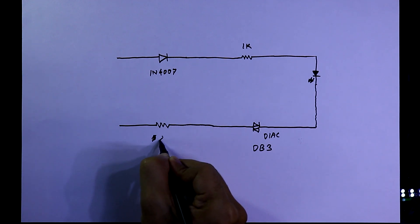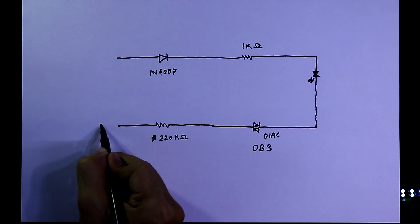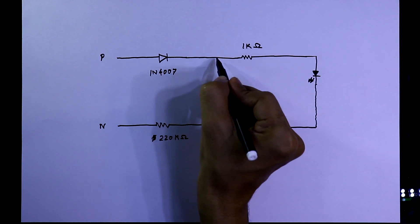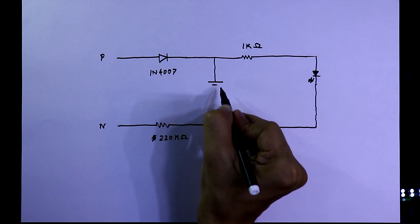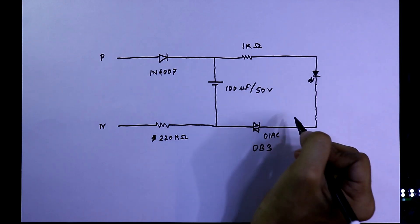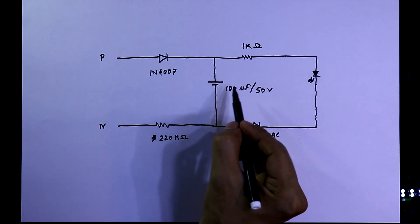And here we have another resistor, I have connected 220 kilo ohms. Then here it is neutral and it is phase, and in between this we have to connect our capacitor, it is 100 microfarad. By changing the value of capacitor and this resistor you can change the blinking speed.